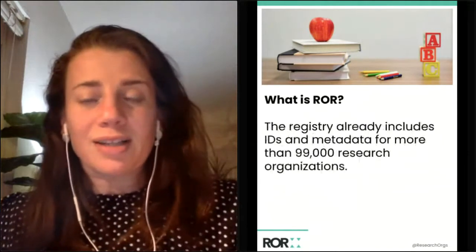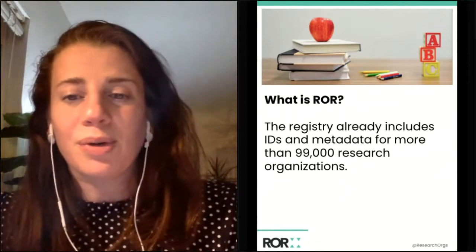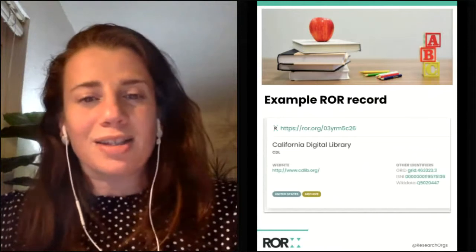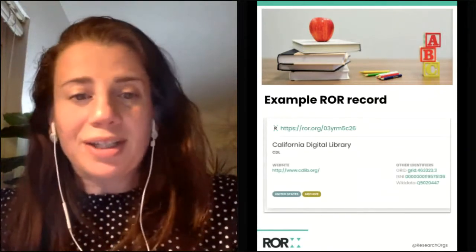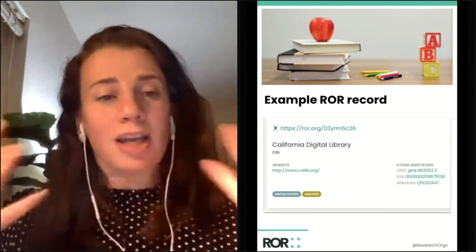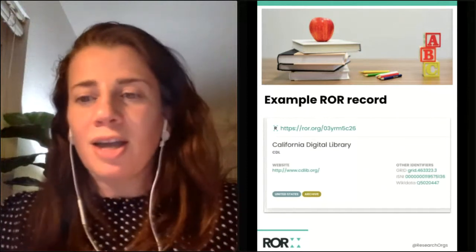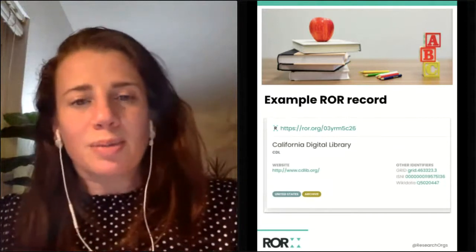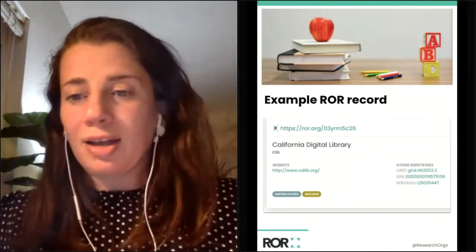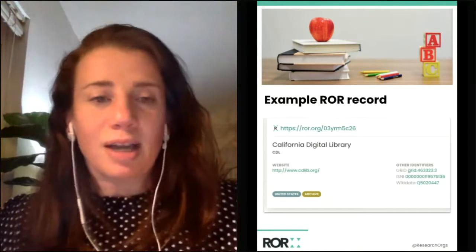The registry exists right now. It has been around for just about two years and already includes IDs and metadata for more than 99,000 research organizations. I'm showing an example of a ROAR record for my organization, California Digital Library. You can see the ROAR ID in the upper left corner, the name of my organization, other metadata like the acronym, the URL, the type of organization. On the right, you can also see that ROAR IDs are meant to be interoperable with other types of identifiers — ROAR maps to GRID, ISNI, Wikidata, and the Crossref Funder Registry.